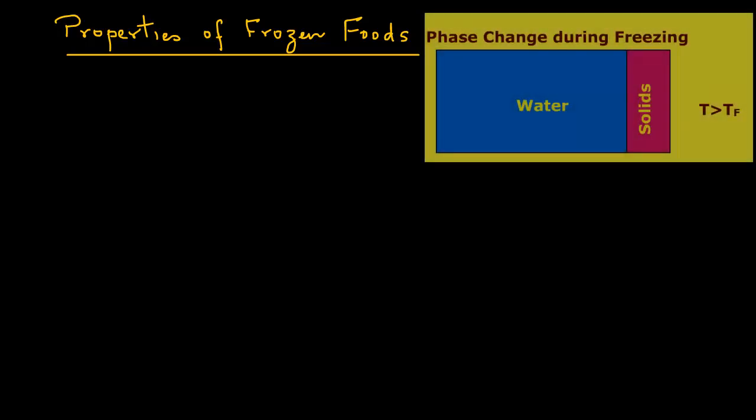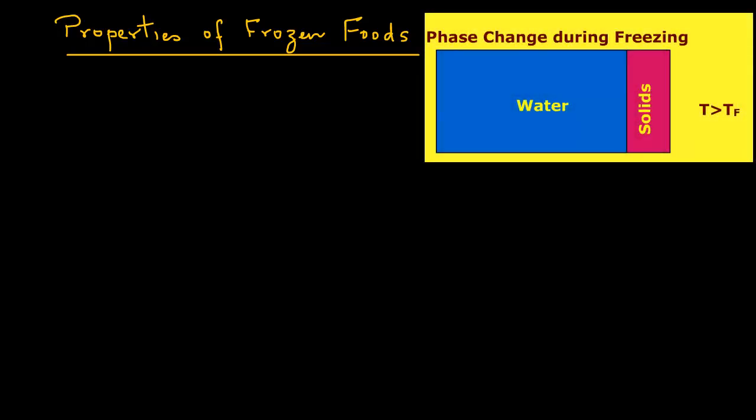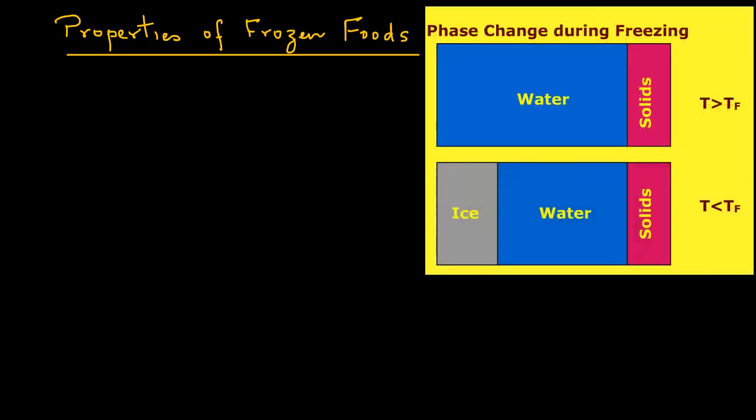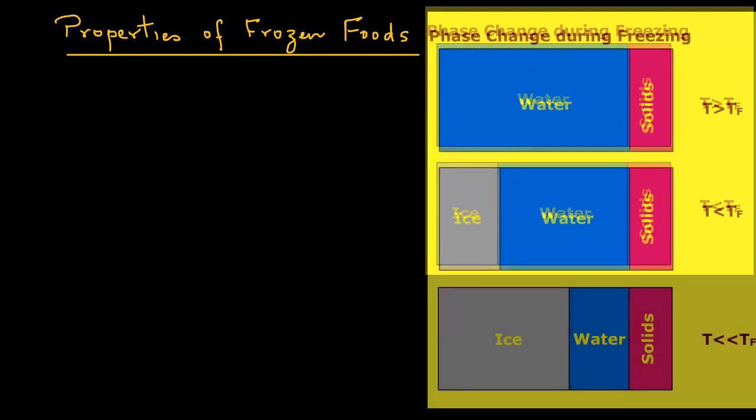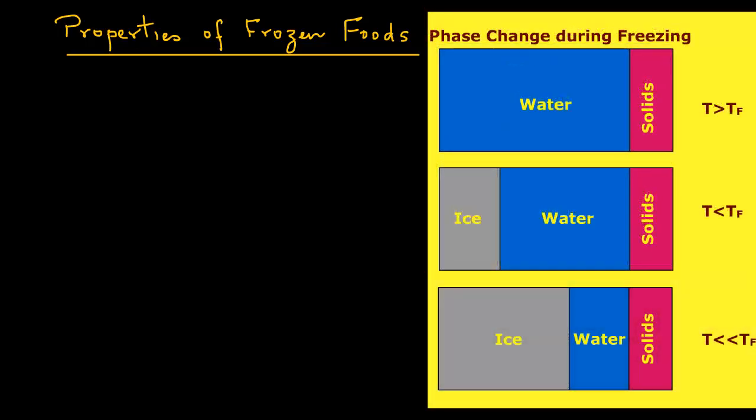This phenomenon is shown here in this figure. It indicates that above the freezing point, a food may be considered to be a mixture of water and solutes. As the temperature is decreased below freezing, the water begins to freeze as pure ice is formed, and the remaining solution — the unfrozen region — becomes more concentrated with the solute. As the temperature is decreased further, the ice component increases while the unfrozen fraction decreases. The properties of the food change with the fraction of water that is converted into ice at any given time.